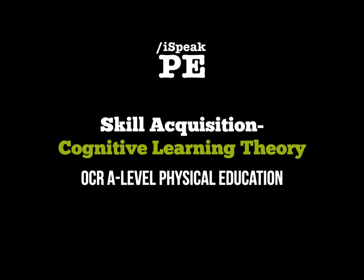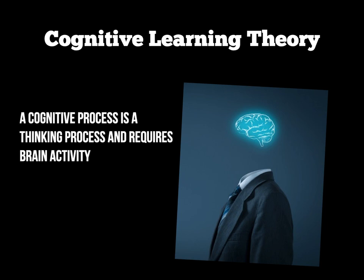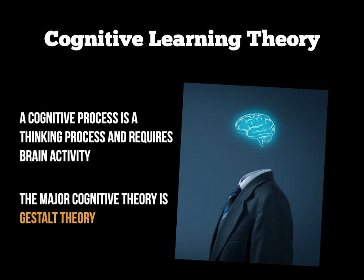Welcome to another OCR A-Level PE screencast. This screencast is going to be discussing Cognitive Learning Theory, which is the third learning theory you need to cover within the skill acquisition topic. In the exams it's often referred to as Cognitive Learning Theory, but you may also see questions that refer to Gestaltism or Gestalt Learning Theory — these are the same thing, so be aware of that when working towards your exams.